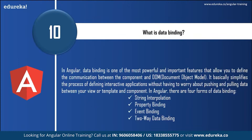Next: what is data binding? Data binding is one of the most powerful and important features that allows you to define the communication between the component and the Document Object Model. It specifies the process of defining interactive applications without having to worry about pushing and pulling data between your view or template and the component. In Angular, there are four forms of data binding: string interpolation, property binding, event binding, and two-way data binding.